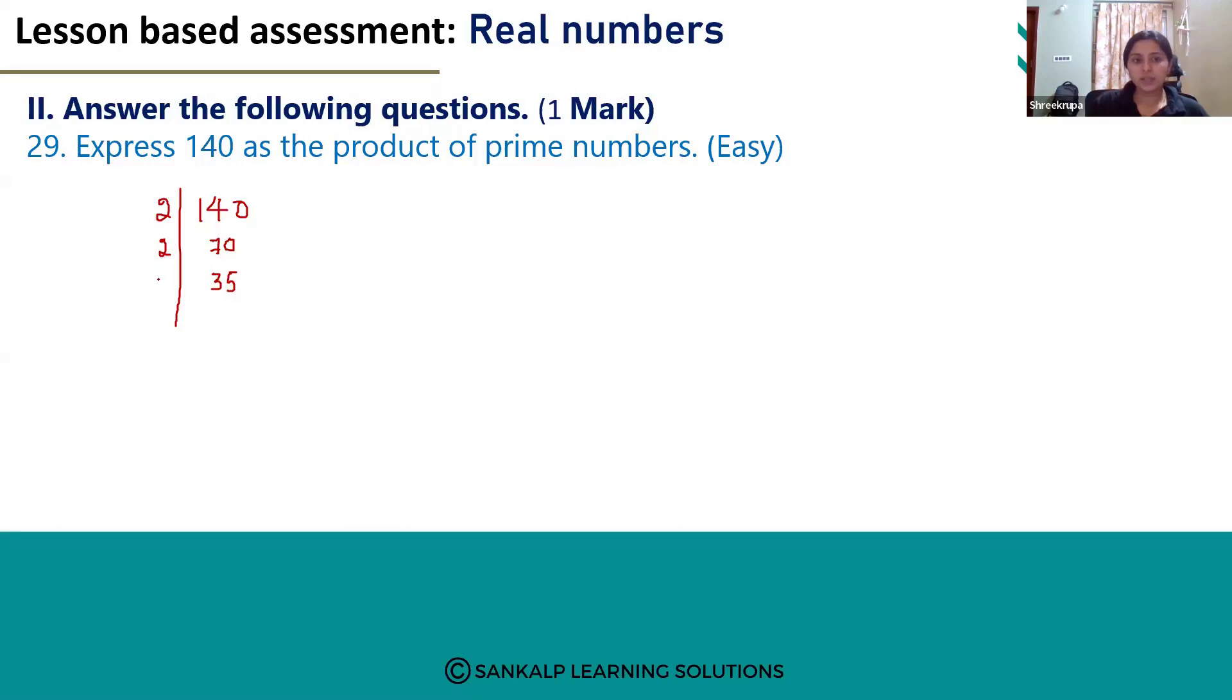So we have to use the next prime number that is 3. But we cannot divide this by 3. So the next prime number is 5. This can be divided by 5. So we use 5 here.